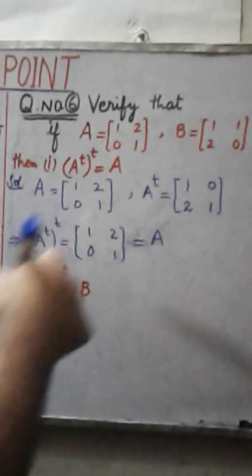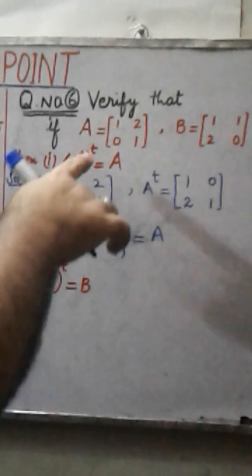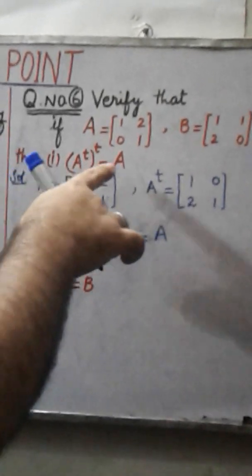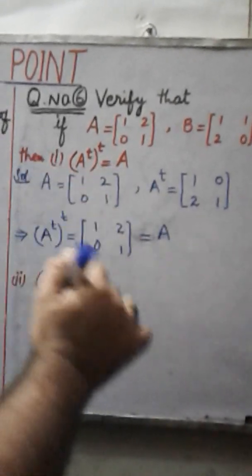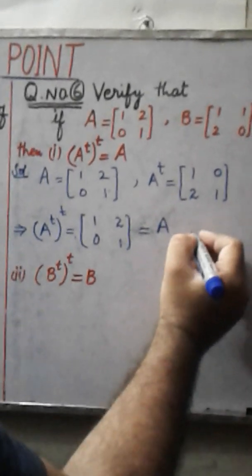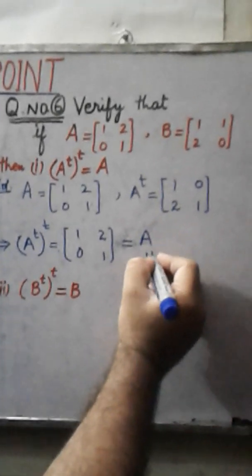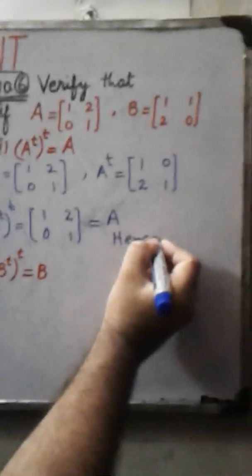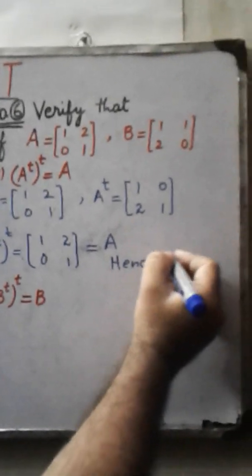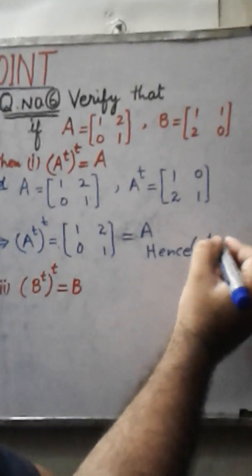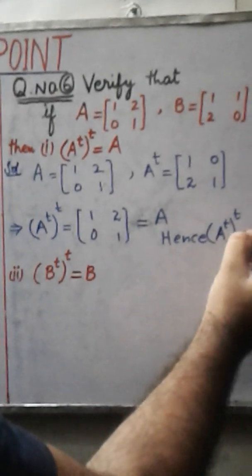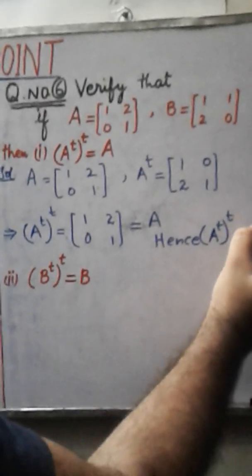Hence it is proved that if we take the transpose of A transpose, it is equal to A. Therefore, transpose of A transpose is equal to A. This completes the first part.